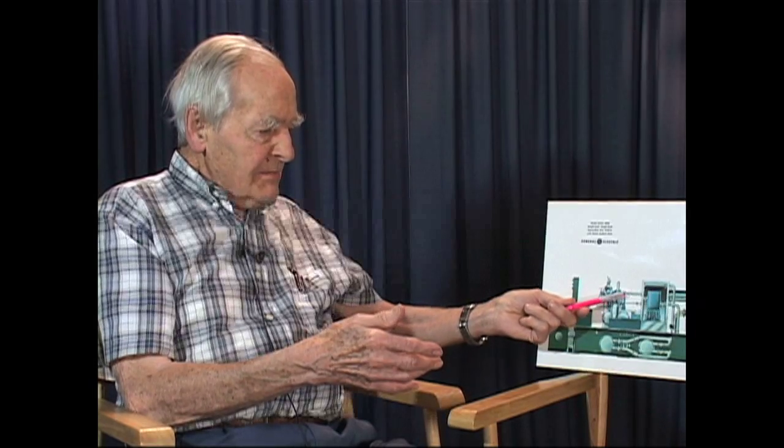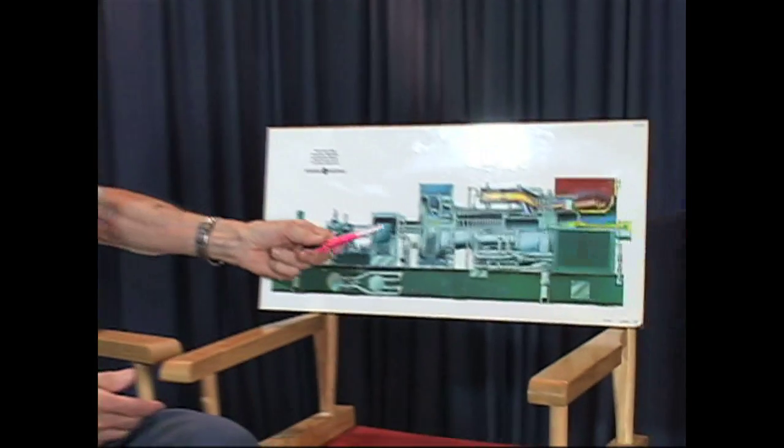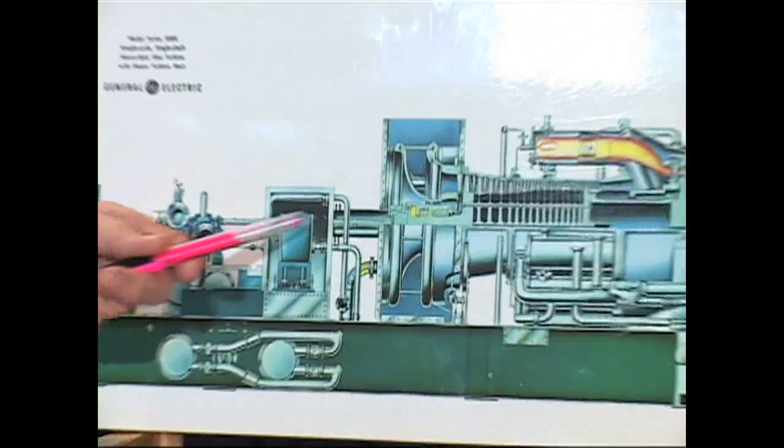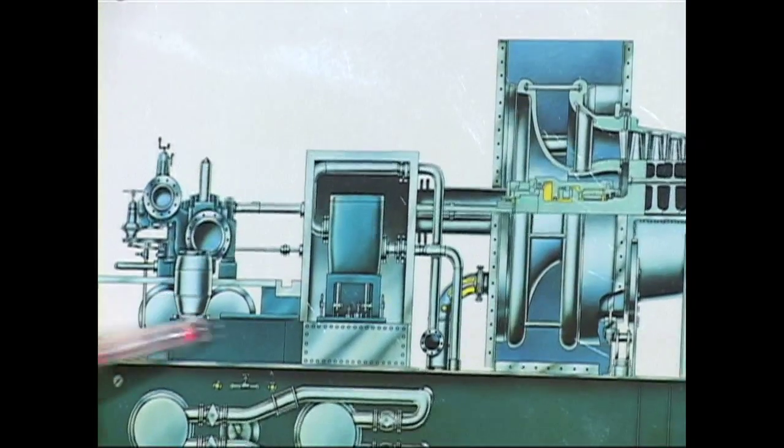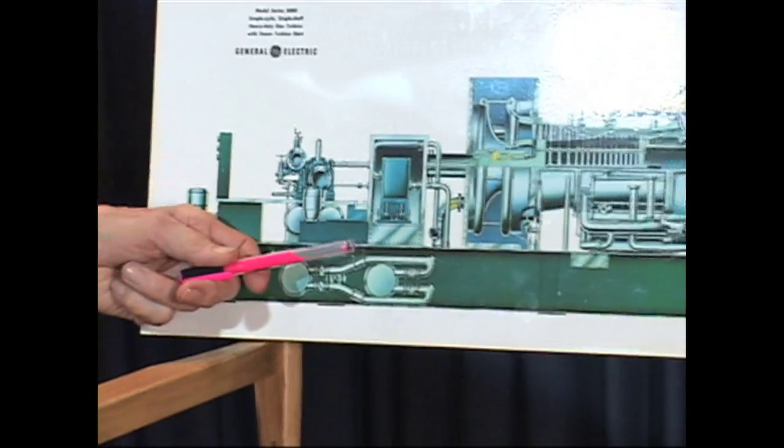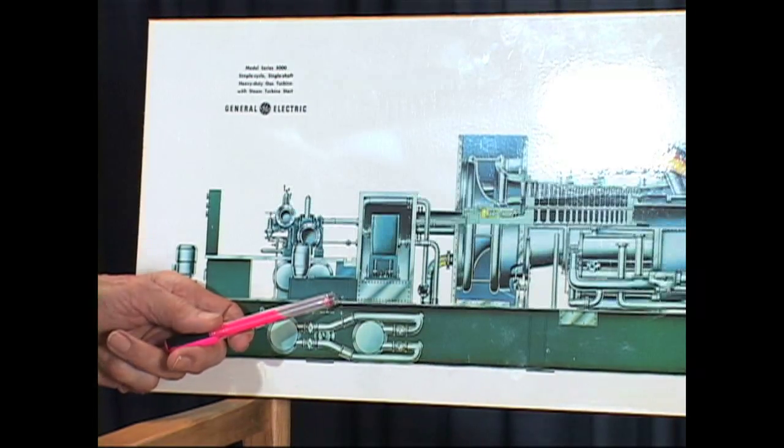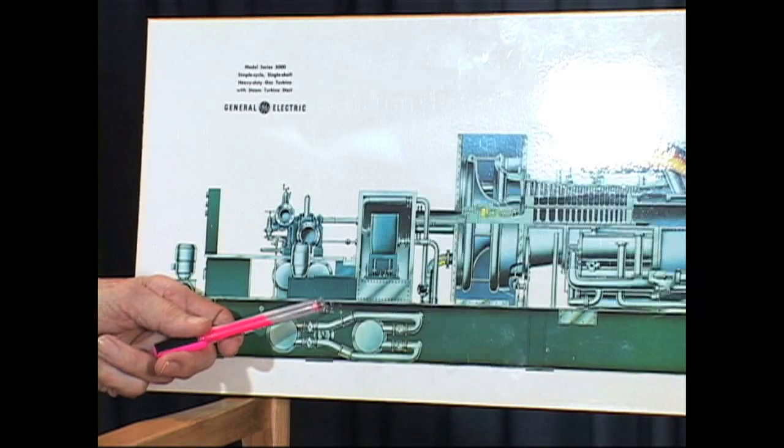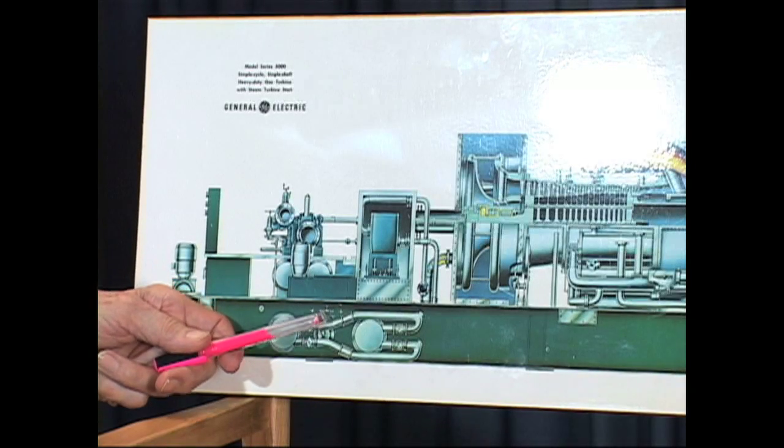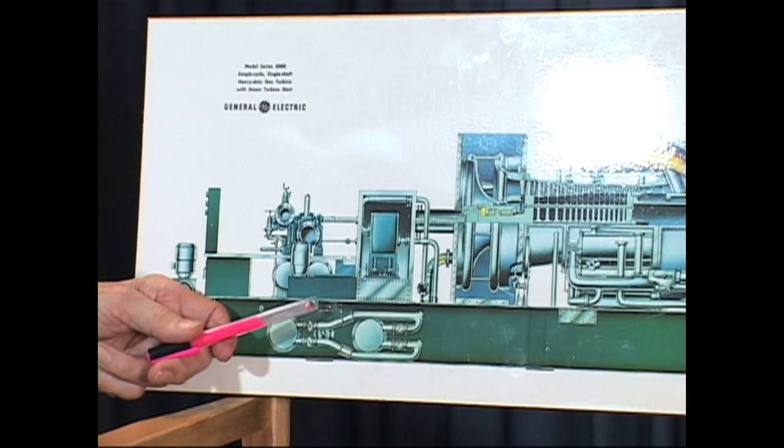Once it has started running and gotten up to speed, then there's a governor. The governor sits here on the shaft—here's the center of the shaft—sits here and knows what the speed is and knows what speed you want and adjusts the fuel flow accordingly. Once you're up to speed.